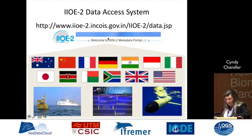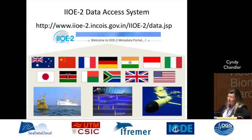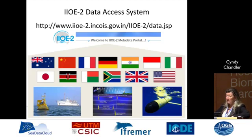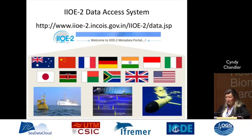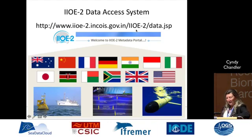Starting from the bottom up, we've got lots of different platforms that are going to be deployed — moorings, ships, floats, gliders, remote sensing, satellite data — and then new instruments that will be invented during the course of the program as well. This is what a large coordinated research program looks like these days. Those flags represent the countries that already have funded research programs or promises of funding. So we're going to get all those countries to work together to get their data and metadata into the IIOE2 metadata portal.